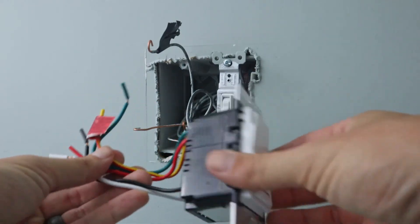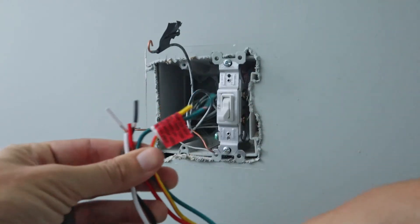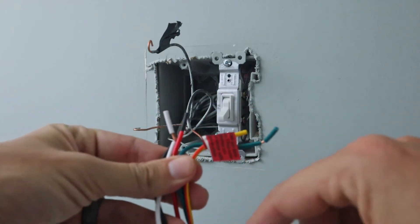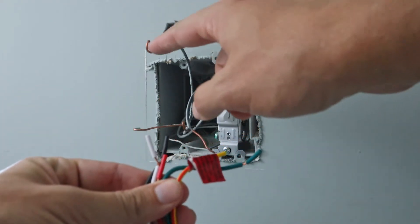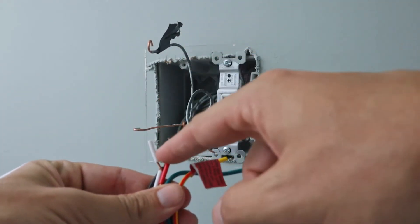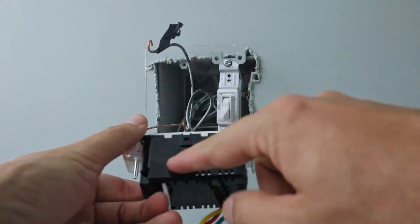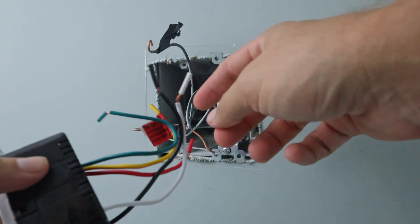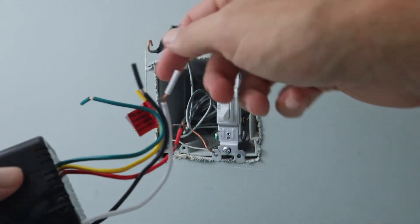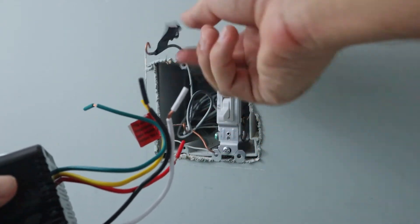So here is the back of the new switch. As you can see, we're just going to be connecting these old wires to the new wires. There's no screws on the side of this, so we're going to have to use wire nuts to connect these wires to the new wires.